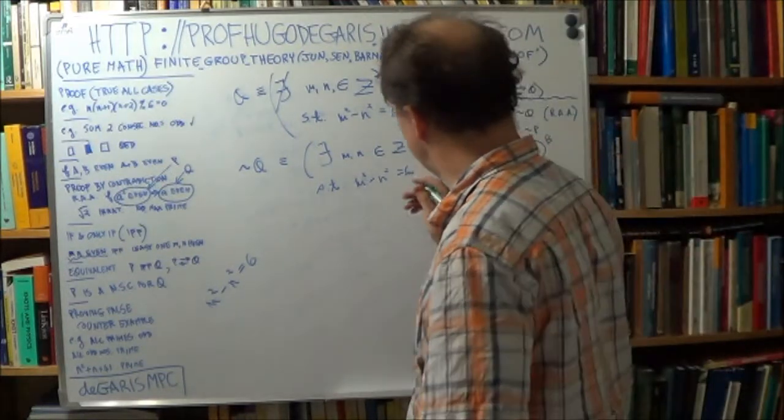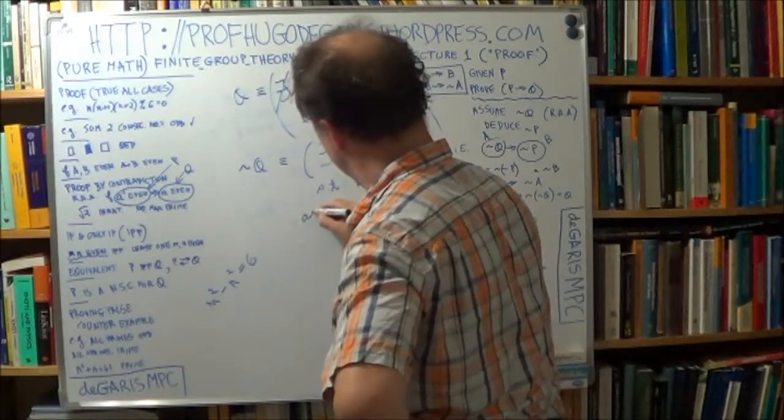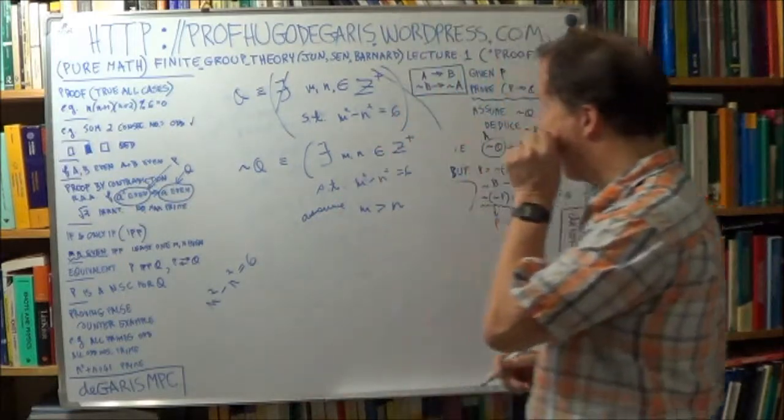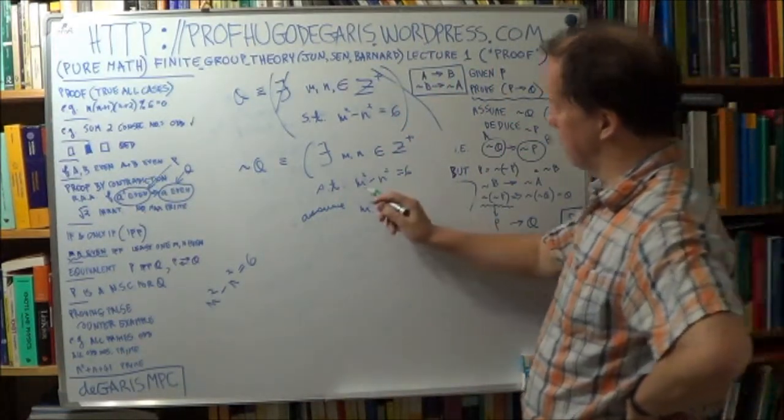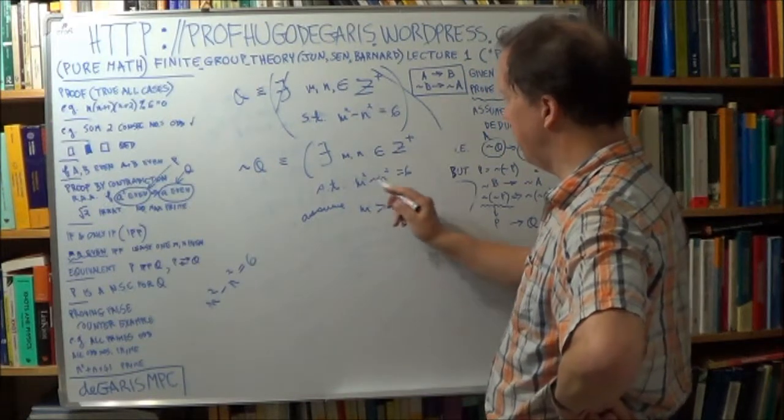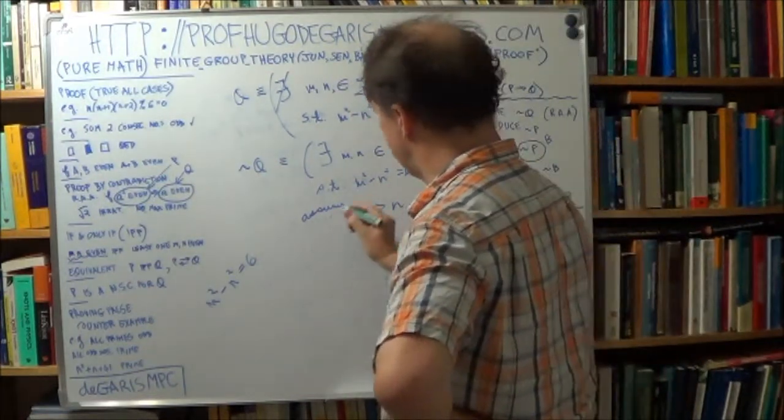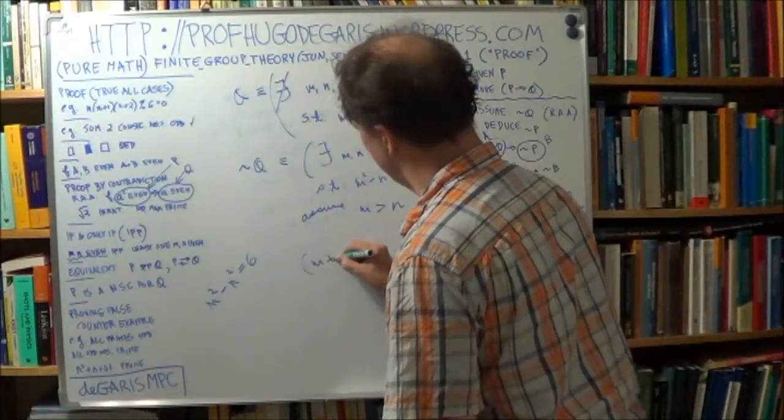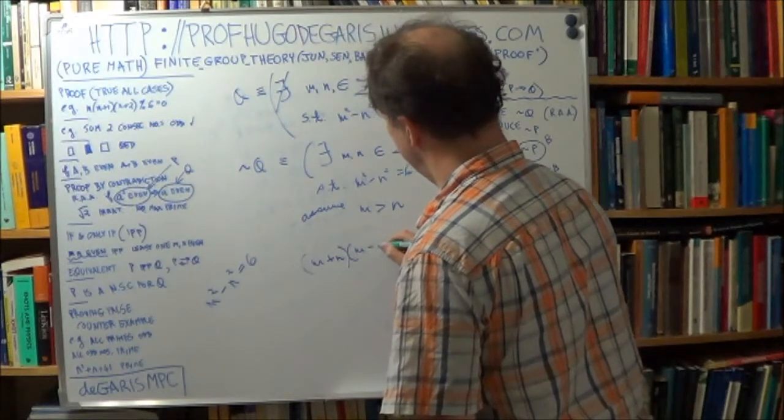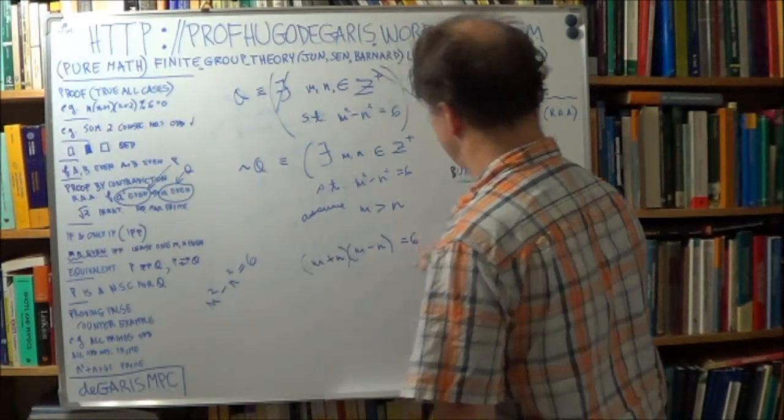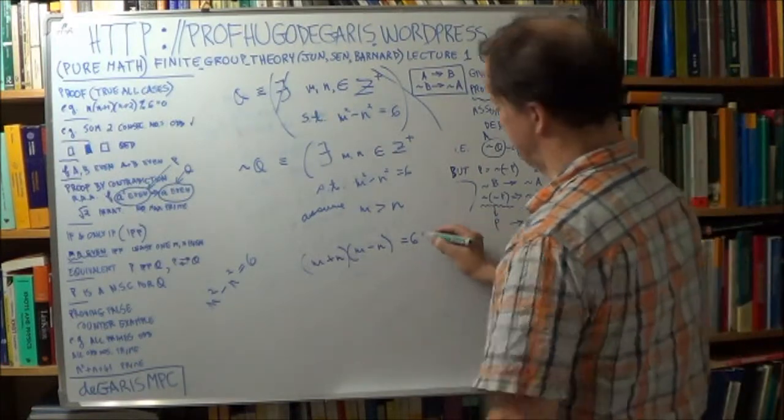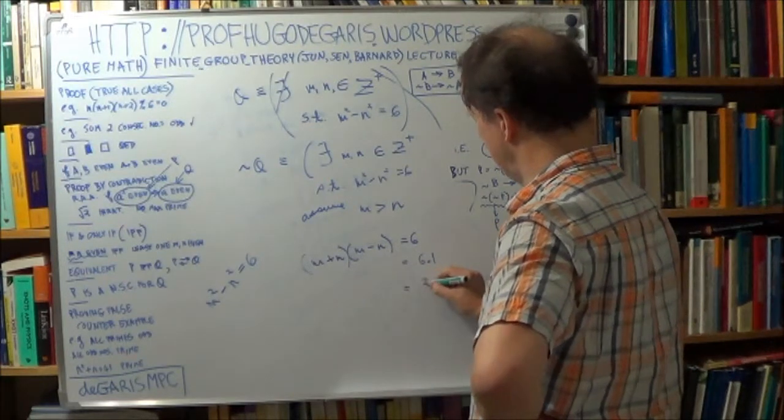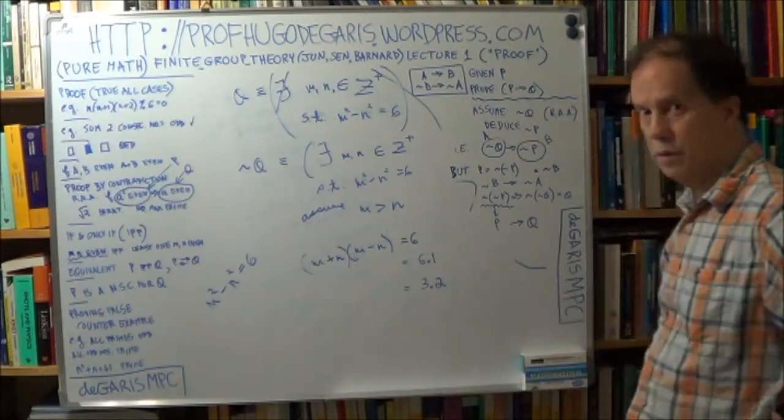Well, let's assume m is greater than n. And m and n are positive, positive integers. So have a look at this: m squared minus n squared, you can rewrite that as m plus n into m minus n equals 6. Now 6 you can write either as 6 times 1 or as 3 times 2.